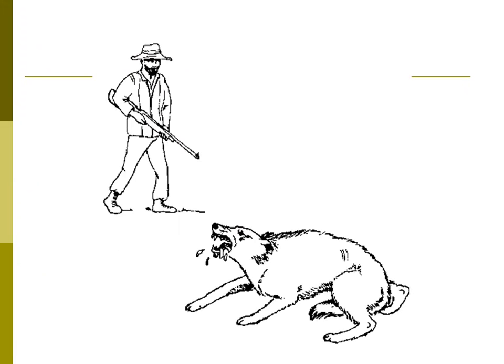Remember that not every dog which bites has rabies. If the dog belongs to somebody, ask the owner about its normal behavior. If the dog is showing signs of rabies, you must inform your veterinary officer immediately. The dog must be shot, and if it has bitten anybody, they must be taken to a hospital immediately for vaccination. If the veterinary authorities confirm the animal is rabid, then shooting the animal will be necessary.